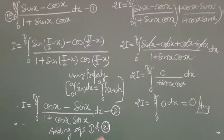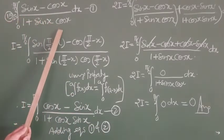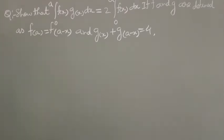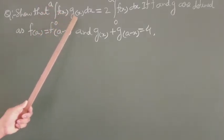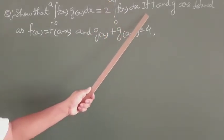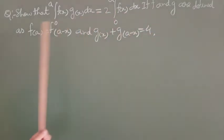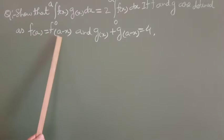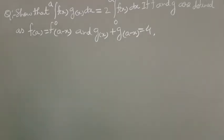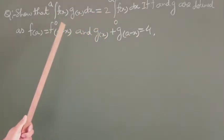Students, you can see this question was solved easily with the help of the property. Learn the property and use it for other types of questions. Now we are going to solve one more question: show that ∫₀ᵃ f(x)g(x)dx = 2∫₀ᵃ f(x)dx, if f and g are defined such that f(a - x) = f(x) and g(x) + g(a - x) = 4.